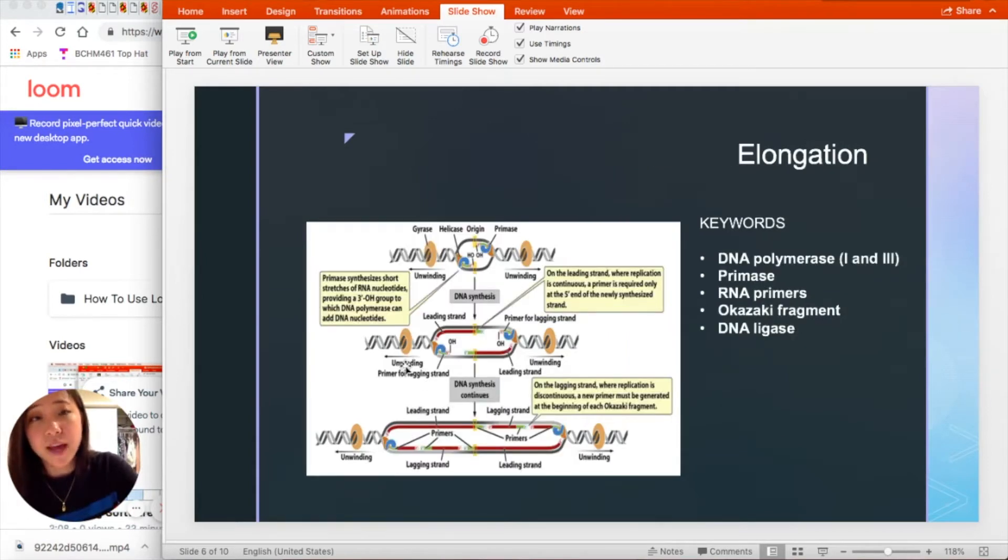Elongation, we have DNA polymerase one and three primase, RNA primers, Okazaki fragment, and DNA ligase.